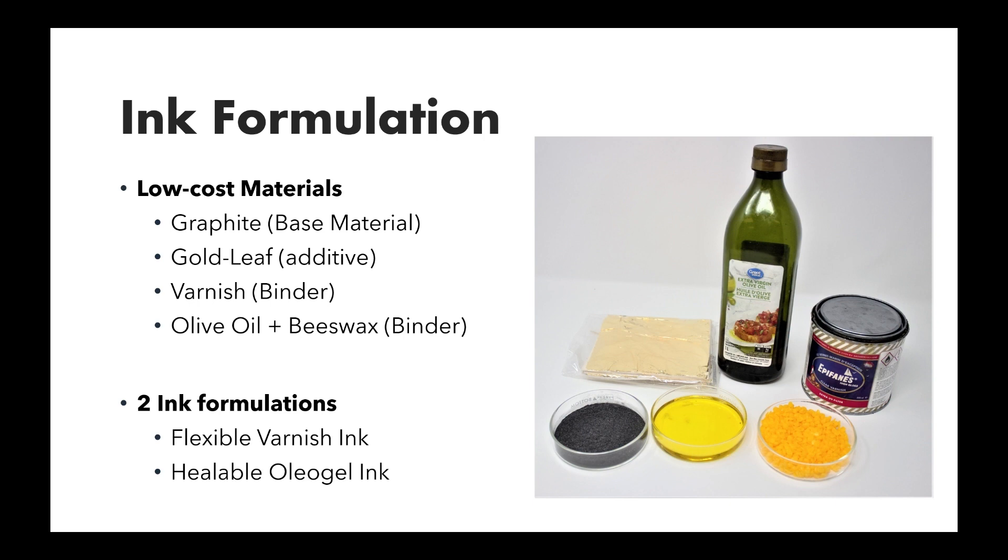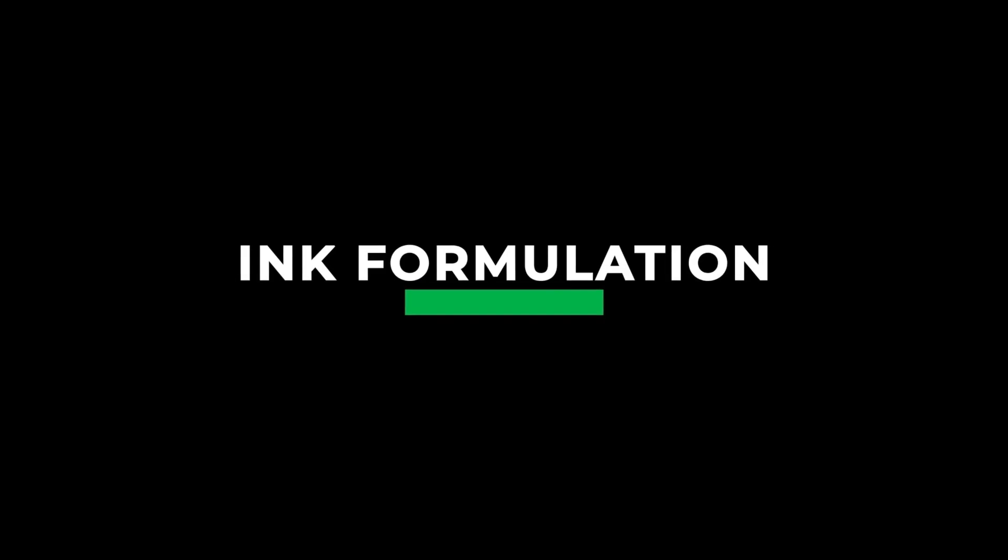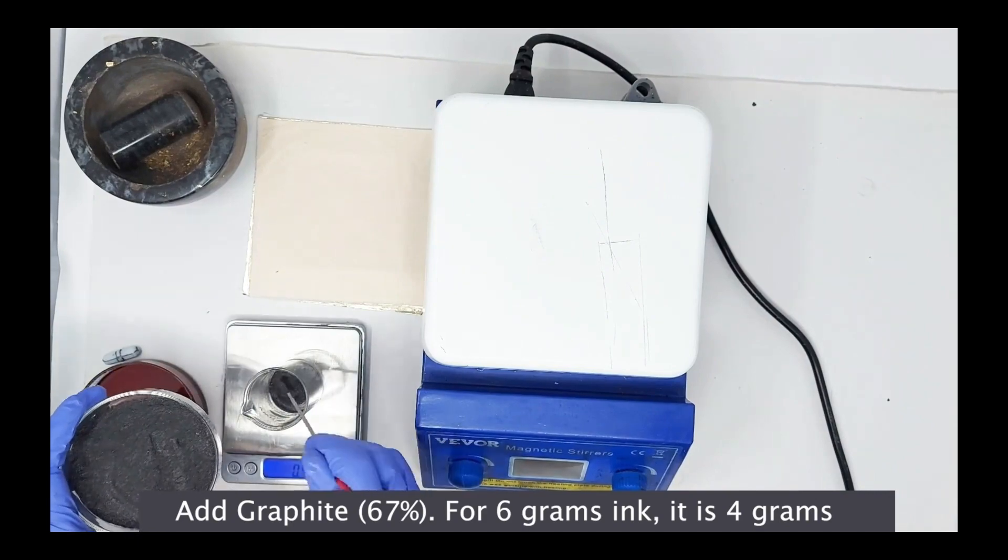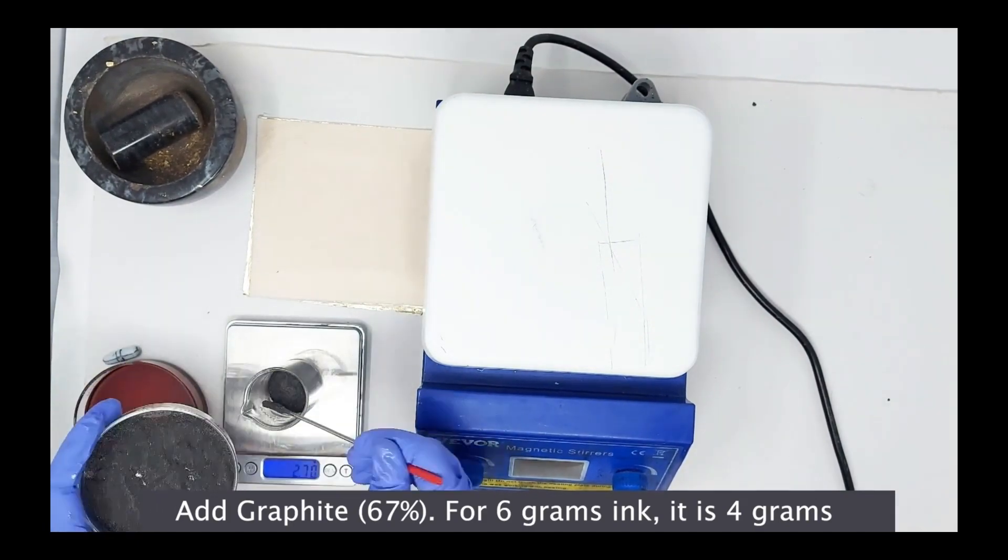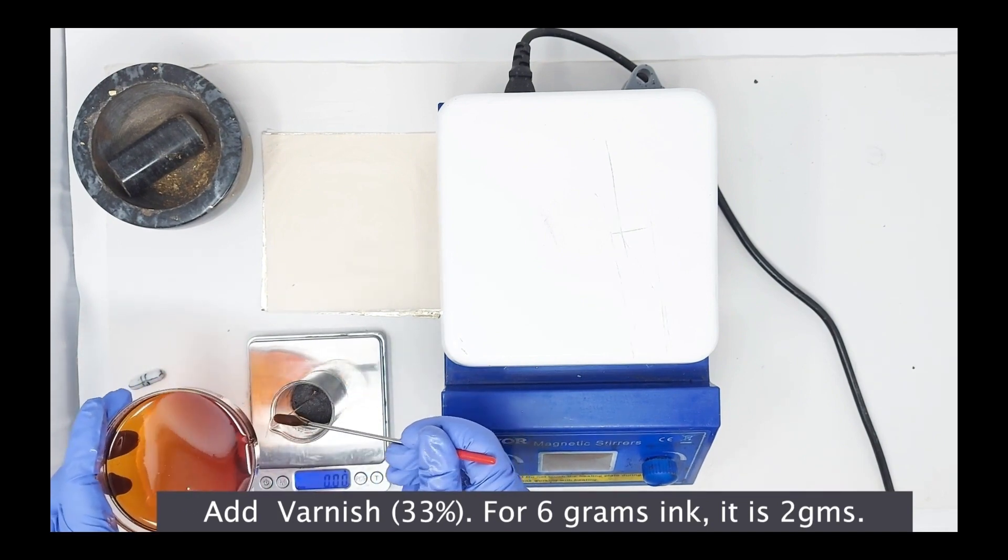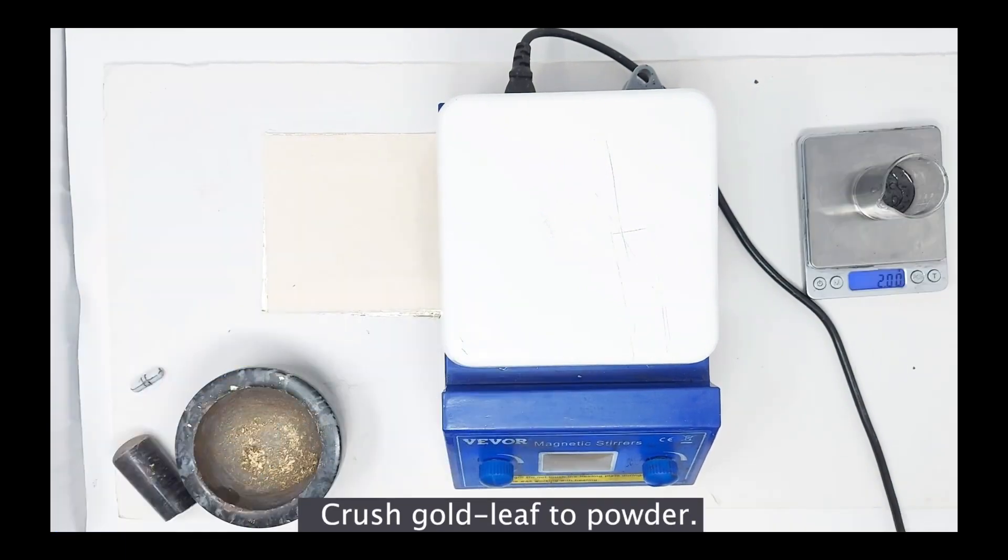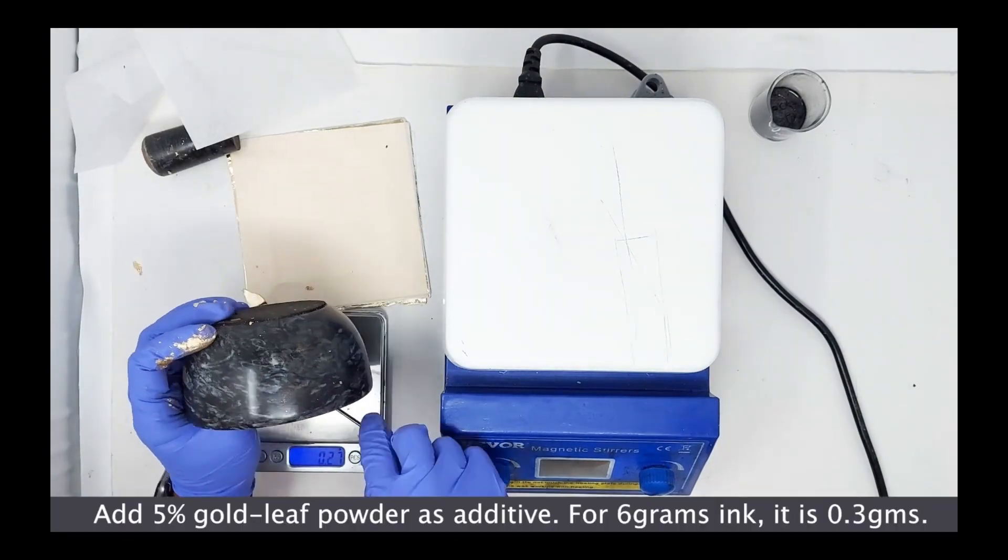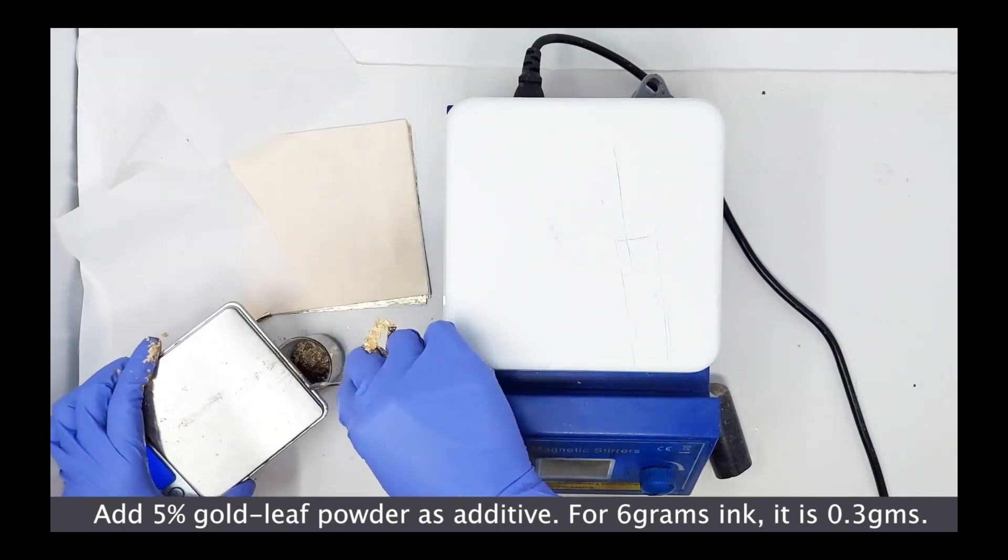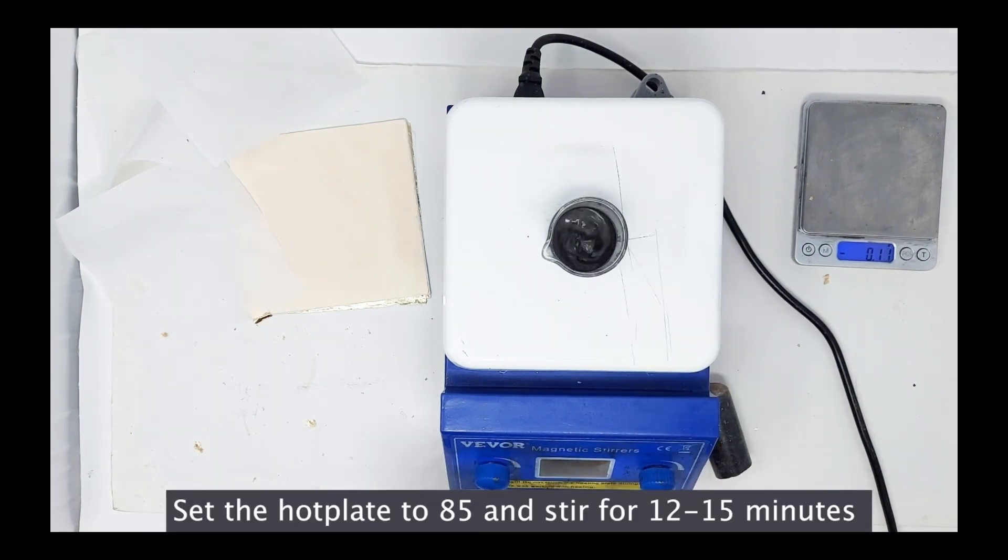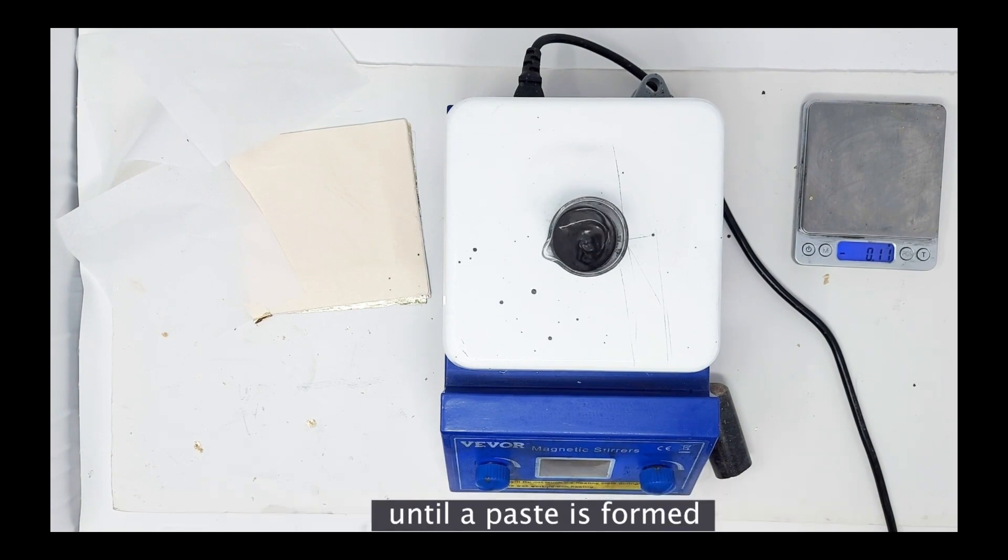Now, looking at the ink formulation of the flexible varnishing. Firstly, we have all our ingredients as mentioned previously. We start off by adding our graphite. We take about six grams if we want to form six grams of ink. We take two-third of the weight to be graphite, which means we take four grams of graphite. Further, we add our varnish which forms 33% of the mixture. So again, since we aim to make six grams of ink, we add two grams of varnish to the previously added graphite. Now, for our additive, we crush our gold leaf to form a fine powder using a mortar and pestle. We weigh this and we add about 0.3 grams of gold leaf to our six grams of base ink. Now, to form a homogeneous mixture, we add some acetone to the entire mixture and stir it on a hot plate at 85 degrees for about 12 to 15 minutes. We do this until a paste is formed and thus, we form our varnish ink.